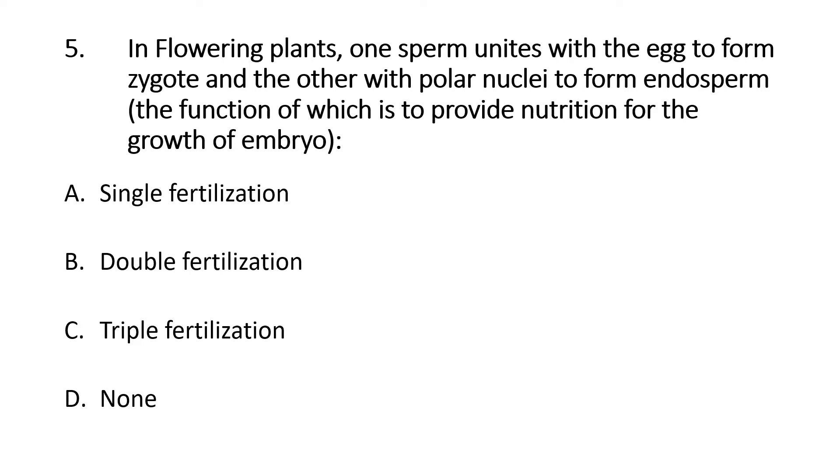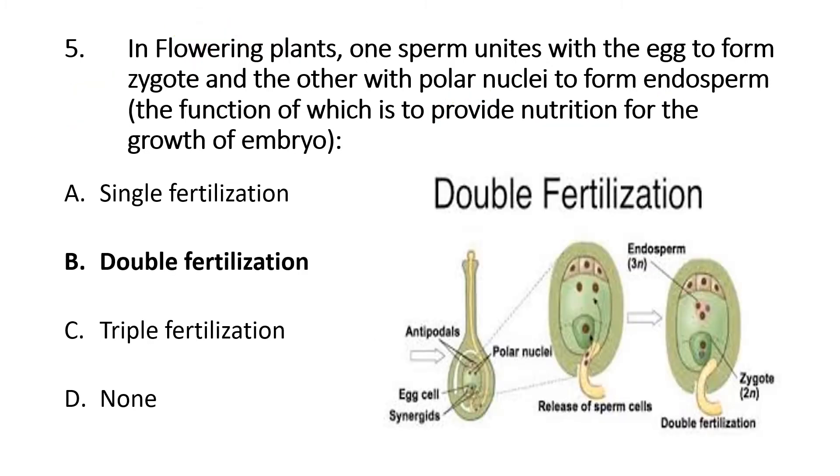In flowering plants, angiosperms, angio means enclosed and sperma in case of plants refers to seed, so seed enclosed in ovary. One sperm unites with the egg to form zygote. The one sperm will form diploid zygote, and the other with the polar nuclei, polar nuclei is already n plus n, sperm joins to make 3n. This forms endosperm. Endosperm's basic function is to provide nutrition for the development of the zygote into embryo. Fertilization happens in zygote and polar nuclei to form the endosperm. The correct answer is beta, double fertilization.